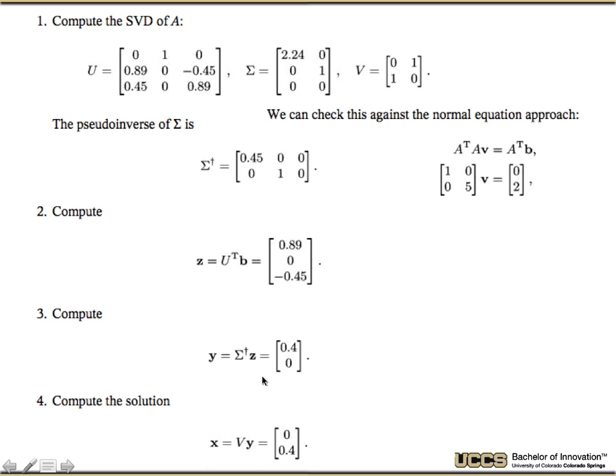And then finally, I'm going to multiply both sides by V, and V times V transpose gives me back the identity matrix. So this gives me my final solution, that x is equal to [0, 4].